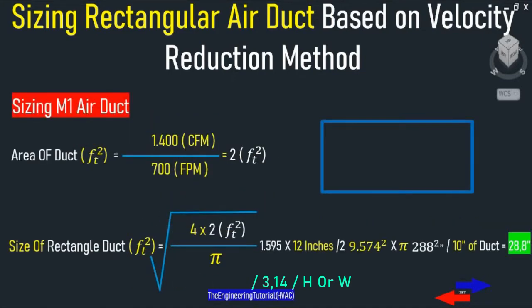Let's start sizing the duct for 1400 CFM first. So 1400 CFM divided by a velocity of 700 FPM, square root of 4 times 2 divided by pi, times 12 inches divided by 2 squared times pi — that gives us 288 square inches. This is the area of the main supply air duct for 1400 CFM at the design recommended velocity of 700 FPM.